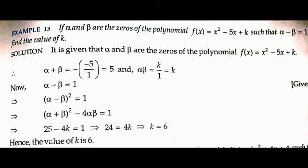Since α - β = 1, squaring both sides gives (α - β)² = 1. Using the identity, (α - β)² = (α + β)² - 4αβ. Substituting: 5² - 4k = 1, so 25 - 4k = 1, which gives 4k = 24, and therefore k = 6.